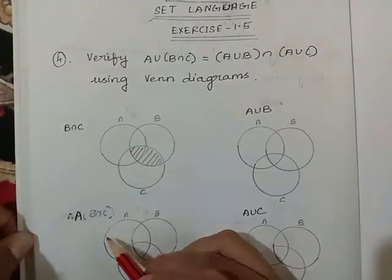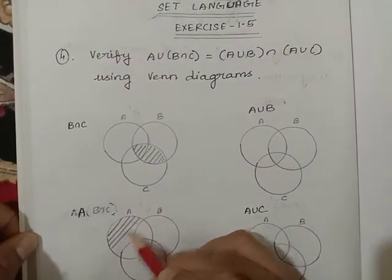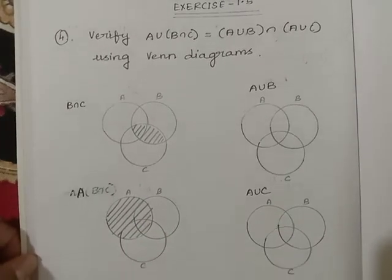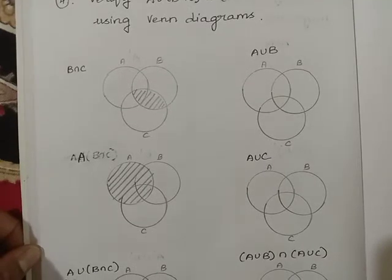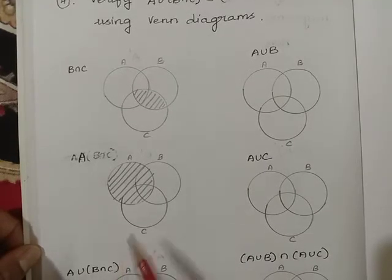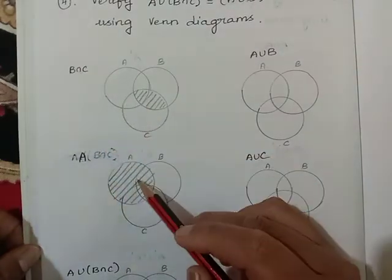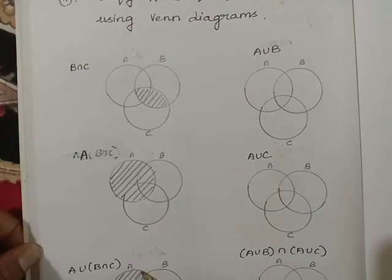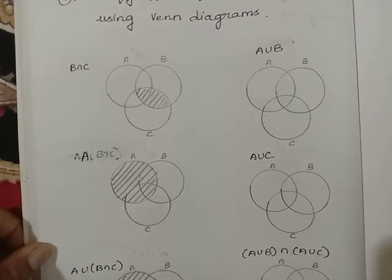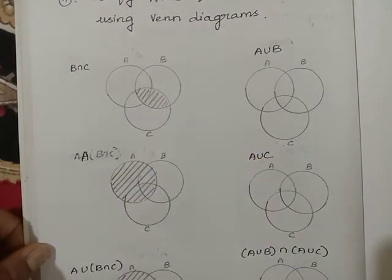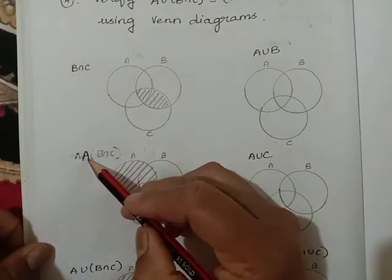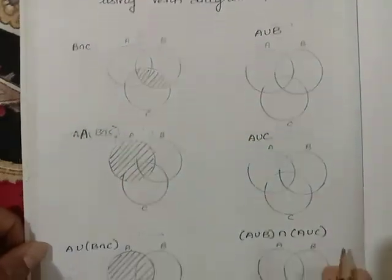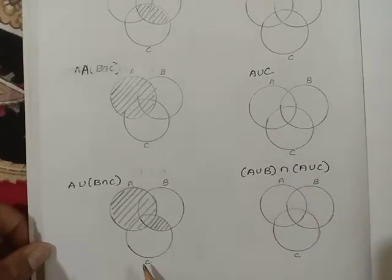First we have A. A means you cover the whole circle of A — this is A. Now we are going to find the whole term A union B intersection C. A union B intersection C means we want A and also the B intersection C. That is the meaning. We want the portion of A and the portion of B intersection C. This is about the left hand side.